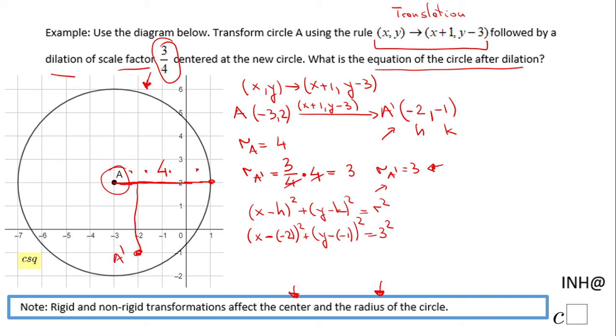The last thing I'm going to do here is to simplify, and the final answer will be (x + 2)² because those two negatives cancel out, plus (y + 1)² and 3² is 9.